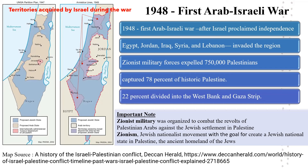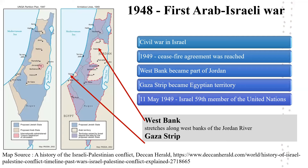The Zionist military was organized to combat the revolts of Palestinian Arabs against the Jewish settlement in Palestine. Zionism is a Jewish nationalist movement with the goal to create a Jewish national state in Palestine, the ancient homeland of the Jews. Civil war broke out throughout all of Israel, but a ceasefire agreement was reached in 1949. As part of the temporary peace agreement, the West Bank became part of Jordan and the Gaza Strip became Egyptian territory. Israel was admitted as the 59th member of the United Nations on 11th May 1949.